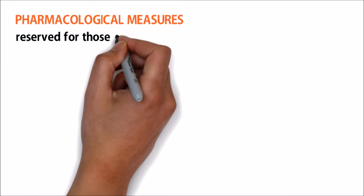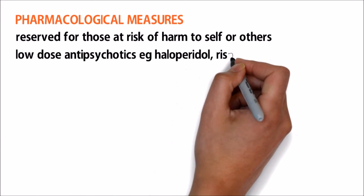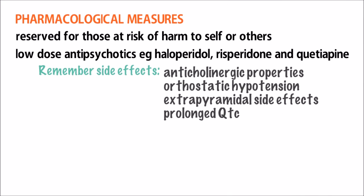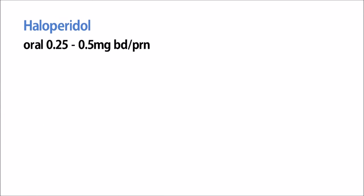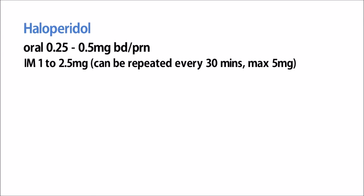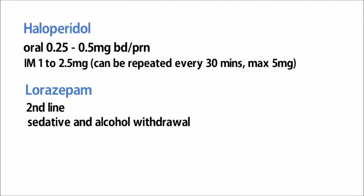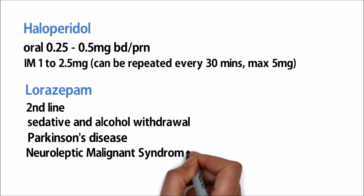Pharmacological measures should be reserved only for patients at risk of harm to self or others. There are many medications, for example low-dose antipsychotics like haloperidol, risperidone, and quetiapine. Remember side effects, which include anticholinergic properties, orthostatic hypotension, extrapyramidal side effects, and prolonged QTc. For those who are confused and agitated, haloperidol can be used as a short-term measure. Oral dose is 0.25 to 0.5 mg BD PRN; intramuscular is 1 to 2.5 mg, which can be repeated every 30 minutes to a maximum of 5 mg. Lorazepam is reserved as a second-line sedative and for alcohol withdrawal, and can also be used in patients with Parkinson's disease and neuroleptic malignant syndrome who are confused.